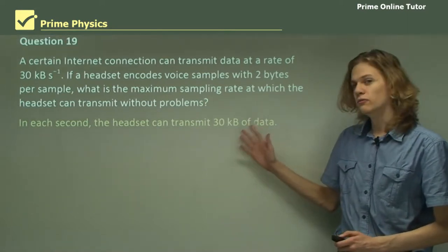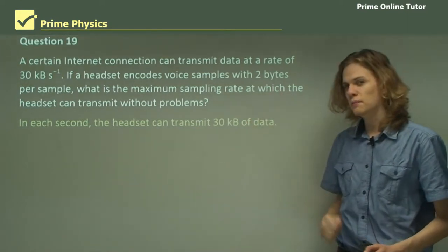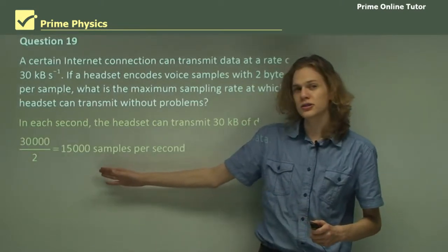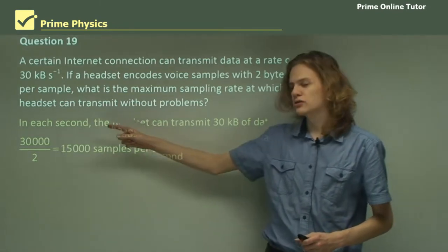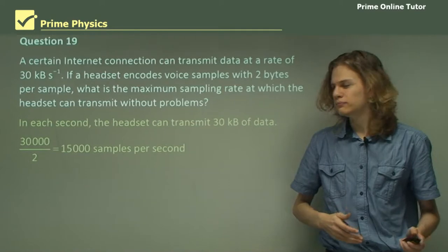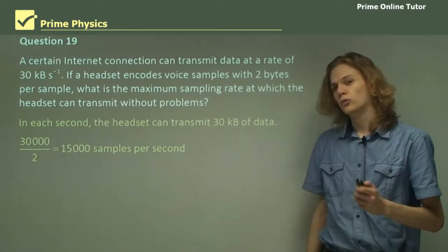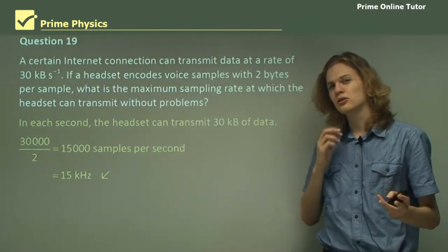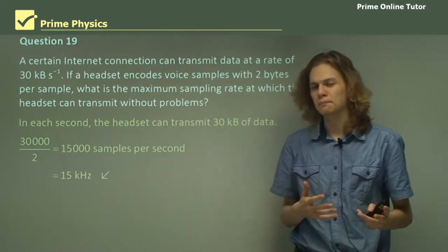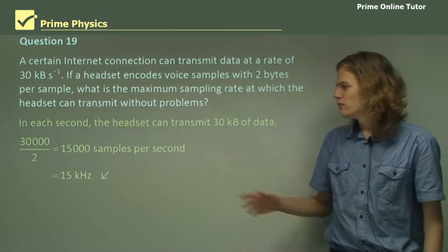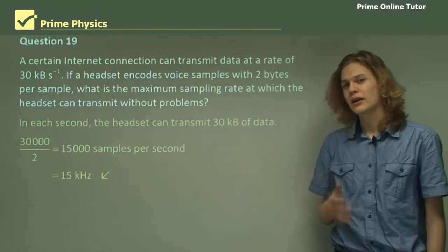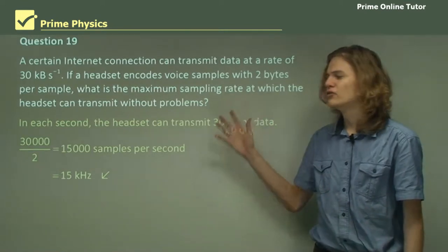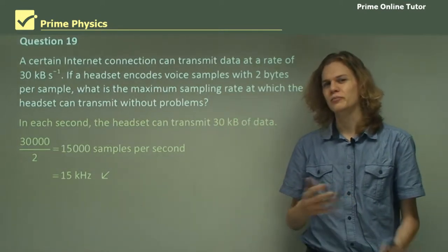So, 30 kilobytes of data and 2 bytes per sample means we can send 15,000 samples per second. 30,000 bytes over 2 bytes per sample. And that will translate to just 15 kilohertz. Now, this is about three times lower than the sampling quality of a CD. That means that the fidelity is not going to be extremely high. However, it's high enough that we'll be able to understand anything that is sent over the microphone. It just won't be extremely high quality sound.